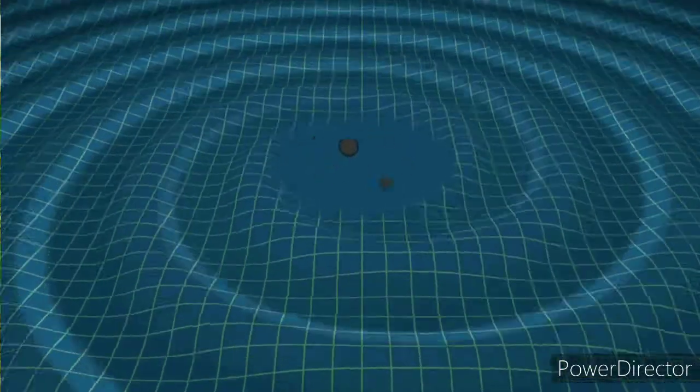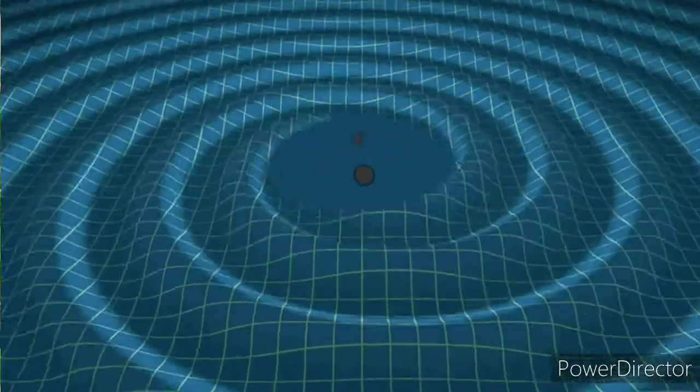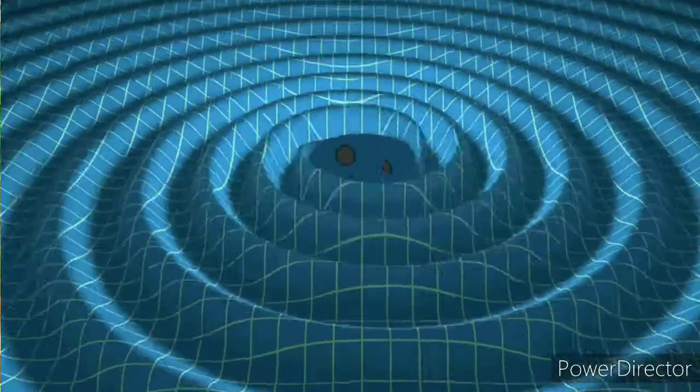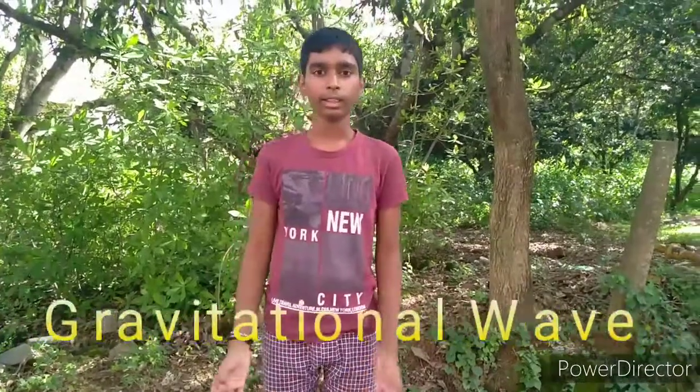In 2015, scientists from LIGO and Virgo reported the first ever discovery of gravitational waves. They observed two black holes of few solar masses each merge together to create a ripple in the fabric of spacetime. This ripple is known as a gravitational wave.